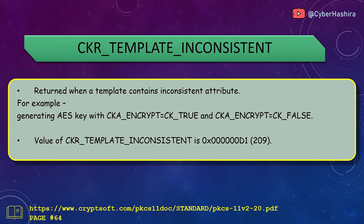If Crypto Key finds any inconsistency in an attribute template, it returns CKR_TEMPLATE_INCONSISTENT. For example, if an AES key template has CKA_ENCRYPT set as true, but then a second entry sets CKA_ENCRYPT as false, Crypto Key sees this as inconsistent information and returns CKR_TEMPLATE_INCONSISTENT. Its value is 0xD1 and is on page 64.